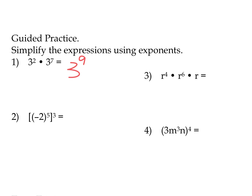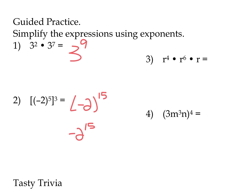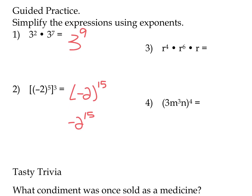Number 2: we have a power raised to another power, so we multiply them together. The parentheses are important here — negative 2 in parentheses to the 15th power is different from negative 2 to the 15th power. Try it on your calculator. Negative 4 squared is not the same as negative 4 squared in parentheses. Without parentheses, only the 4 is squared, giving negative 16. With parentheses, negative 4 times negative 4 gives positive 16. Be careful with parentheses when you have negative bases raised to some power.